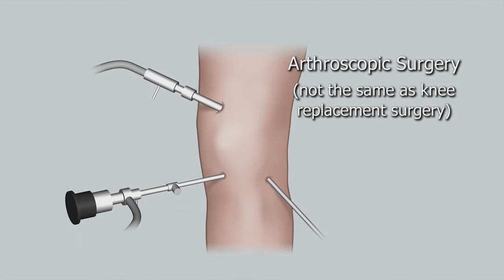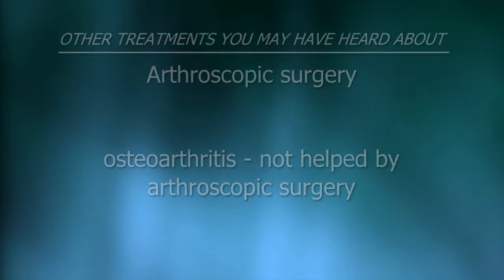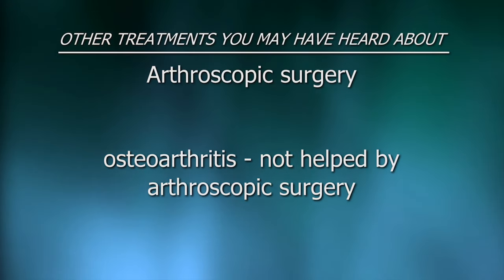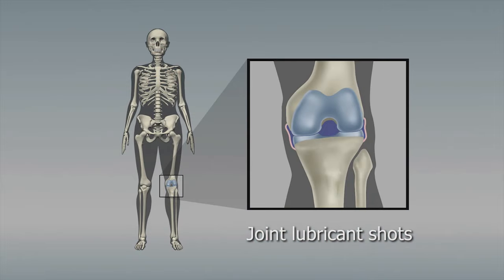You may have heard of arthroscopic surgery, where the surgeon operates on your knee joint through a small opening in the skin. Although there are many knee conditions that are helped by this kind of surgery, osteoarthritis is not one of them. Another treatment you might have heard of involves injections filled with joint lubricant — a gel-like substance injected right into the knee. These shots aren't the same as cortisone shots that are sometimes used when your joints get swollen.